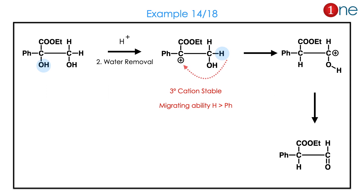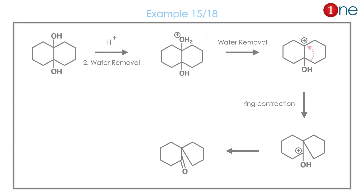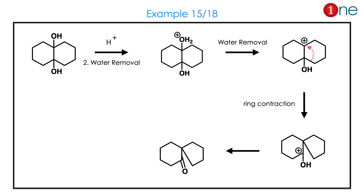Migrating ability of hydrogen is higher than phenyl. Let us look at the next question. You have a fused alcohol in a bicyclic ring system. Protonation occurs, cation is formed, and the ring contracts to achieve neutrality. Neutralization occurs through carbonyl formation — the cation is quenched through carbonyl formation. Since you start from the fused system, you end up with ring contraction.